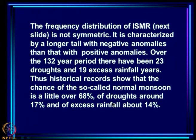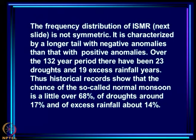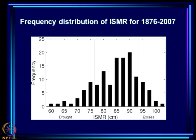Over the 132-year period there have been 23 droughts and 19 excess rainfall years. Historical records show that the chance of the so-called normal monsoon — neither a drought nor an excess rainfall — is a little over 68 percent, droughts around 17 percent, and excess rainfall around 14 percent. This is just the chance based on historical data.